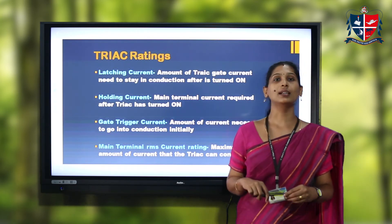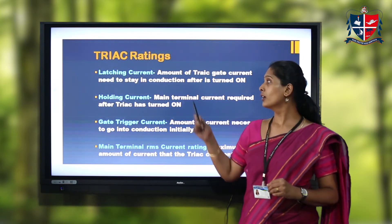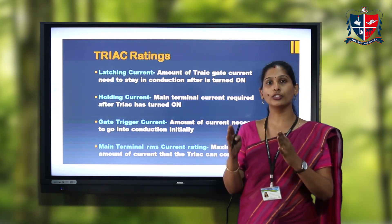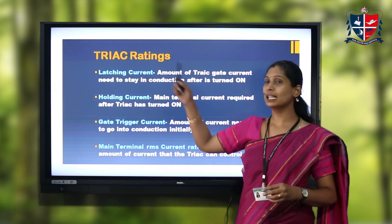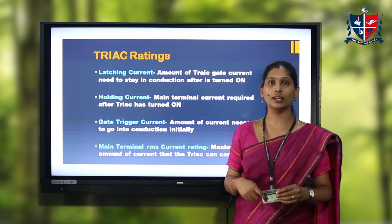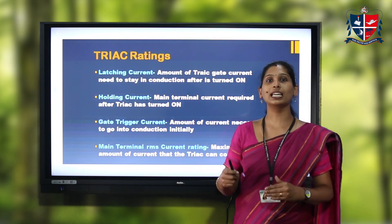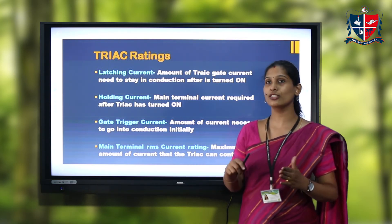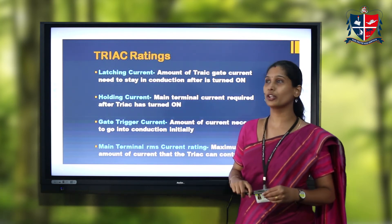Now let's look at some parameters and rating values given in the specification sheet of TRIAC. The first is latching current — after the TRIAC is turned on, the amount of TRIAC current required to remain in the conduction state is the latching current. Similarly, holding current is the amount of main terminal current required to remain in the conduction state. Both latching current and holding current are specified after the TRIAC has been turned on.